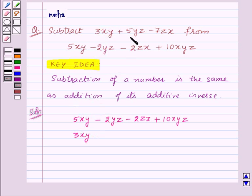Let us write 5yz below minus 2yz as they are like terms. Now, let us write minus 7zx below minus 2zx as they are like terms.